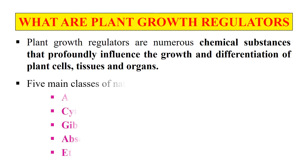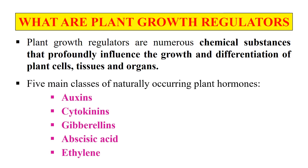There are mainly five classes of these naturally occurring plant hormones or growth regulators: auxins, cytokinin, gibberellin, abscisic acid, and ethylene. Now let's discuss them.